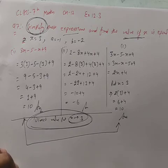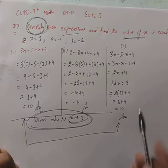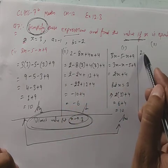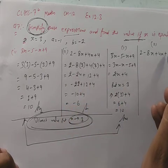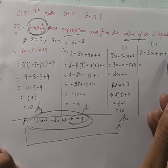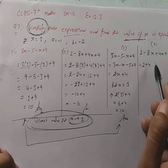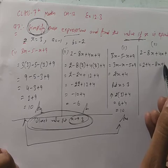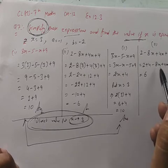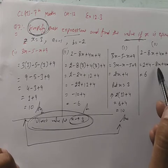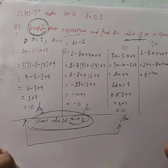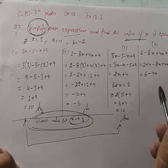अब second part को दोबारा करते हैं: 2 minus 8x plus 4x plus 4. पहले simplify: 2 plus 4 = 6 (like terms), और minus 8x plus 4x = minus 4x (बड़े के सामने minus है)। तो simplified हो गया: 6 minus 4x.